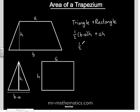Now we will multiply the brackets out. So we have a half BH minus a half AH plus AH.